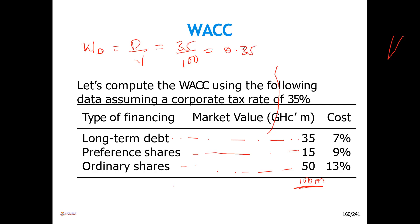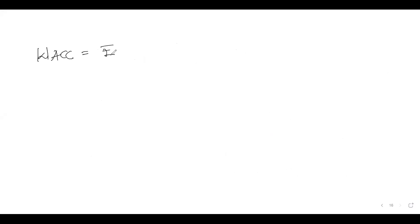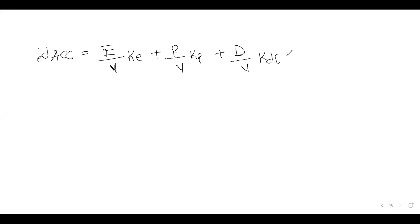The weight shows the relative importance of each item. The formula for WACC is: equity over total value times cost of equity, plus preference shares over total value times cost of preferences, plus debt over total value times cost of debt times one minus tax — because we always find the after-tax cost of debt.